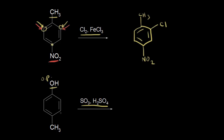Looking at where the ortho position would be on my ring — once again by symmetry, these are the same ortho positions. The para position is taken up by the methyl group. The methyl group is also an ortho-para director. What's ortho and para to the methyl group? These two spots are ortho — identical because of symmetry — and the para spot is taken up by the OH. So now we have two ortho-para directors directing to two different spots.